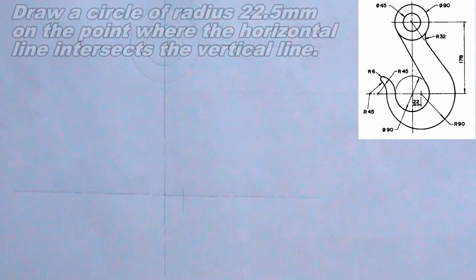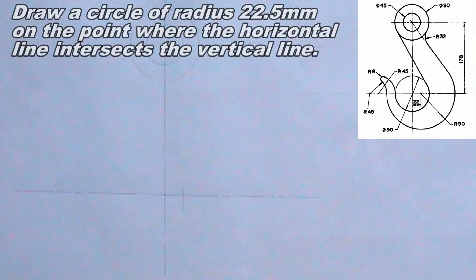Next, I will draw a circle of radius 22.5 mm on the point where the horizontal line intersects the vertical line. And I will also draw a circle of radius 45 mm on the point where the second vertical line intersects the lower horizontal line.